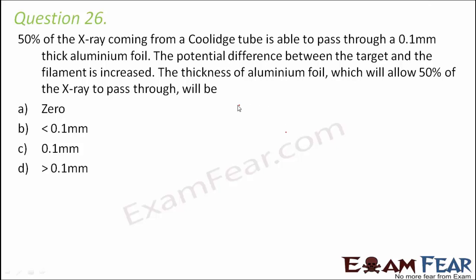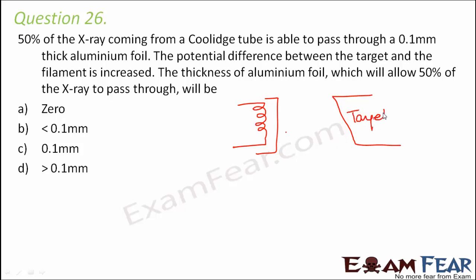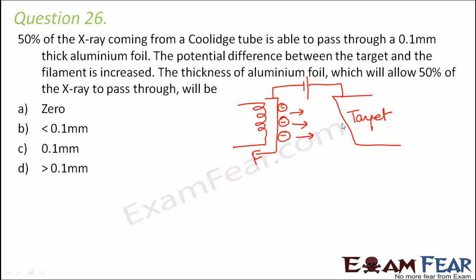If we look at this tube, there is a filament on one side and a target material on the other side. Between these two, a potential difference is applied. The electrons come from the filament as fast-moving electrons and they hit the target. As a result, the x-rays are produced at the target.